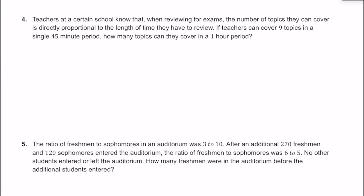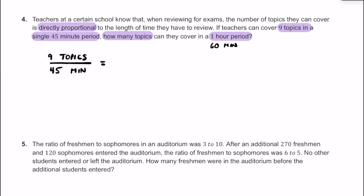Here's another problem. In number four, teachers at a certain school know that the number of topics they can cover is directly proportional to the length of time they have to review. If the teachers can cover 9 topics in a single 45-minute period, how many topics can they cover if they have one hour to review? It's important to note we have different units: minutes and hours. One hour is the same thing as 60 minutes, so let's set up a proportion with 9 topics in 45 minutes equal to x topics in 60 minutes.